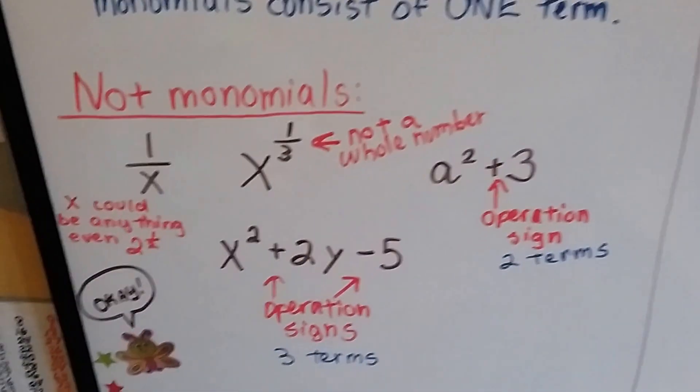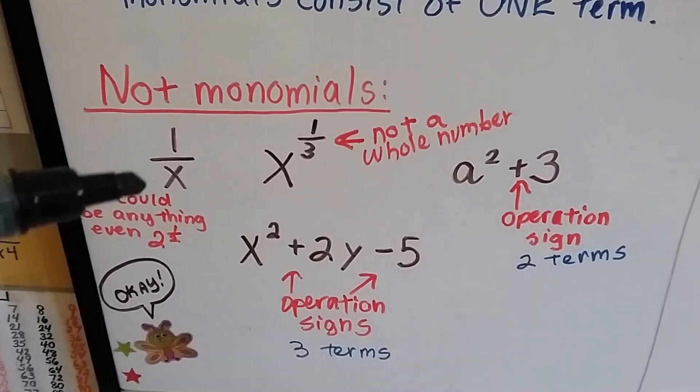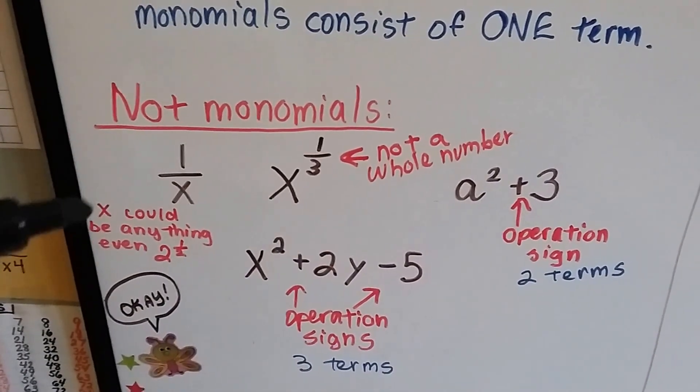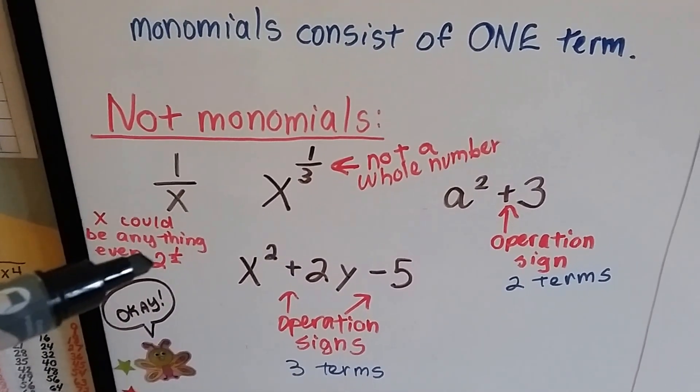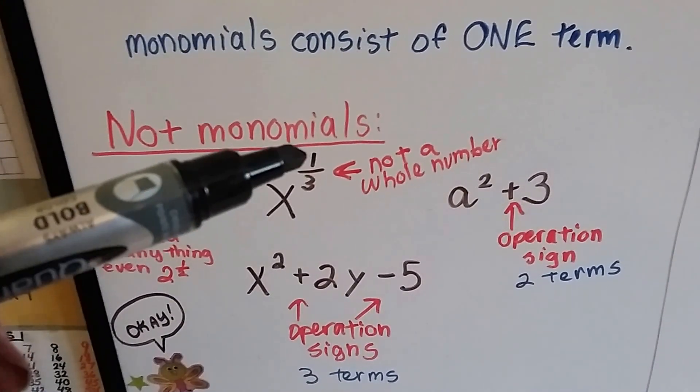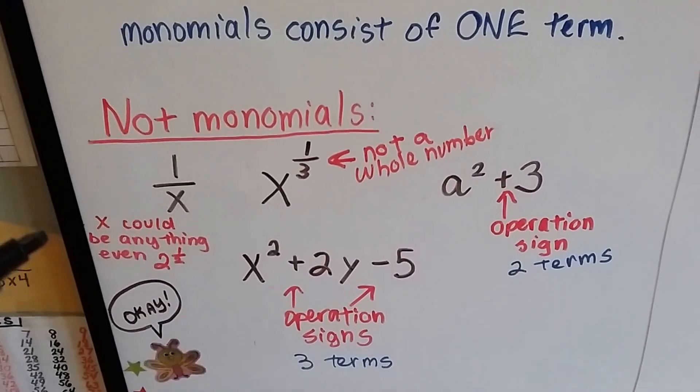These are not monomials. 1 divided by x, well, not only does it have an operation sign for division, but x could be anything. It could even be 2 with a half exponent. x to the 1 third power, that's not a whole number exponent, so that's not a monomial.